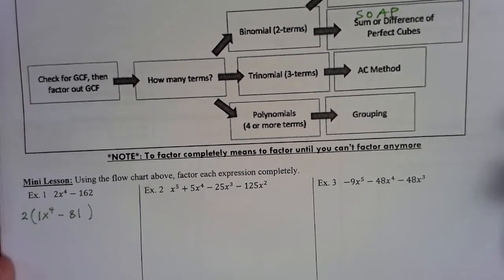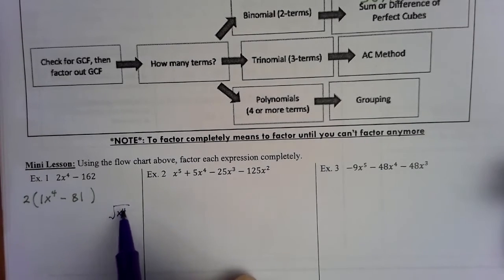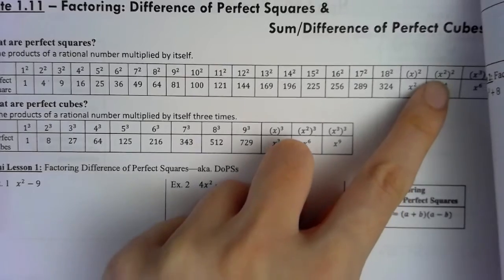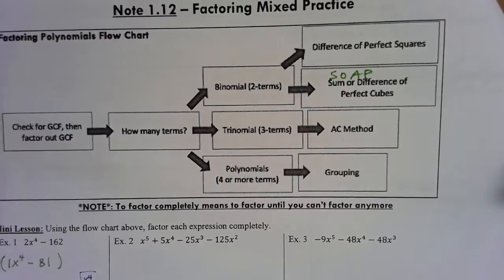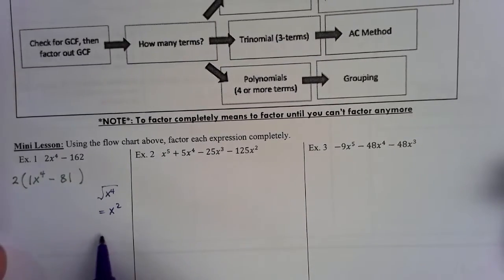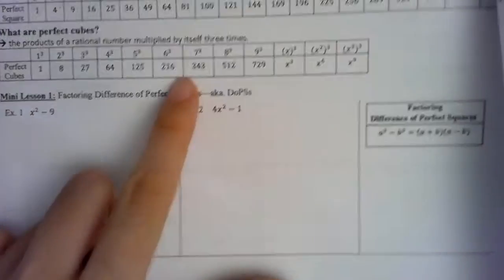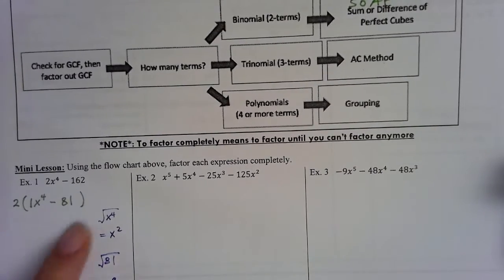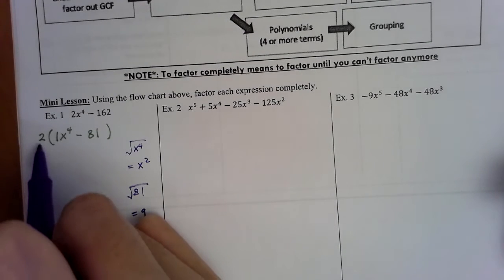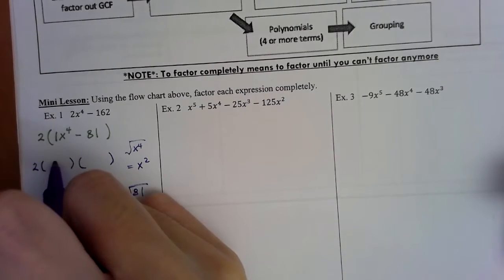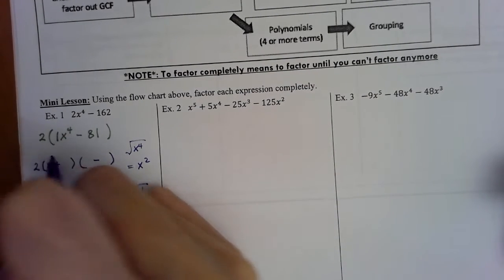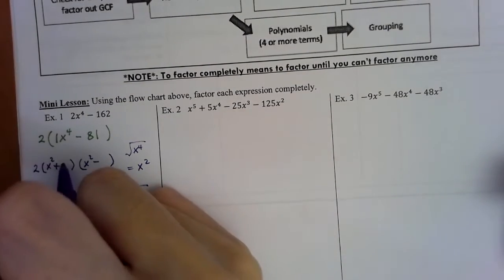To factor a difference of perfect squares, we take the square root of each term. Square root of x to the fourth: using the chart, you divide the exponent by 2, giving x squared. Square root of 81 is 9. Now I create two sets of parentheses — one with a plus and one with a minus — and place x squared in the first spot of each binomial and 9 in the second spot.